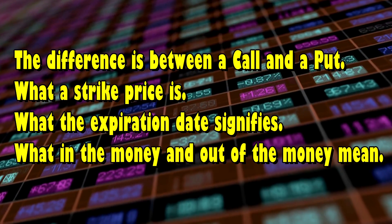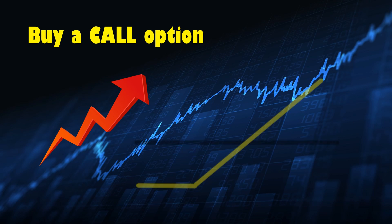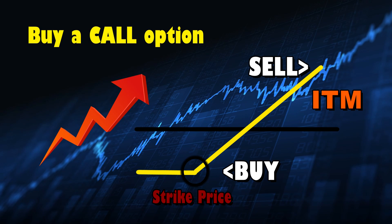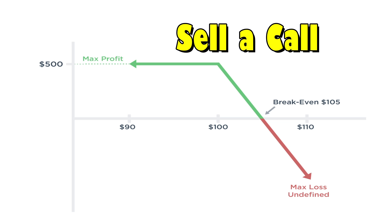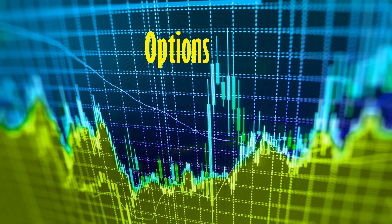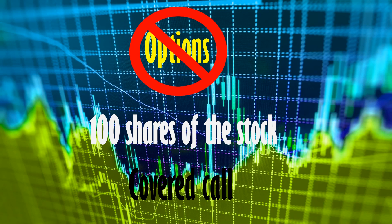You would typically buy a call option if you think the stock price is going to go up and will be above the strike price prior to expiration, or in the money at expiration. If the stock rises above the strike price, you can exercise the option and buy the stock at the lower strike price and sell it at the higher market price for a profit. Or if the price of the option itself moves higher prior to expiration, you could do a sell to close, which allows you to sell your option for a profit, closing the position. You would typically sell a call option if you believe the stock price will never rise to or above the strike price before option expiration. When the stock price doesn't exceed the strike price at expiration, the option will expire worthless and you get to keep the amount you sold it for. If you're just starting out, you won't be able to sell a call option unless you already own 100 shares of the stock. This makes it a covered call and prevents the risk of you being short on the call option if the stock price skyrockets.